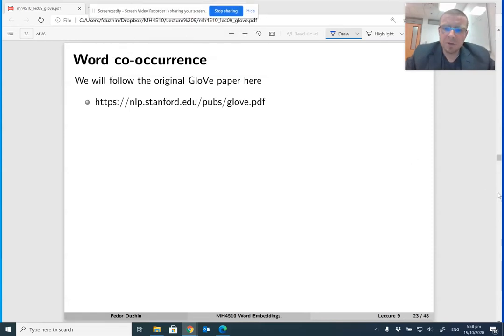So the first concept to understand GloVe is the word co-occurrence. By the way, I'm just following the original GloVe paper that you can download from, well, it is actually on NTU Learn, but you can also download it from the Stanford repository.